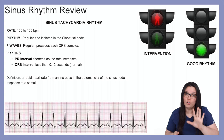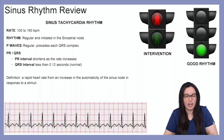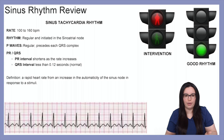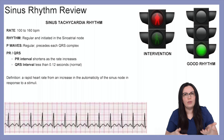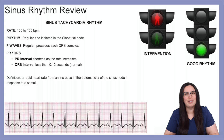To begin we're going to be talking about sinus tachycardia. The rate of sinus tachycardia is between 100 to 160 beats per minute. The rhythm is regular and is initiated in the sinoatrial node. You're going to see regular P waves preceding QRS complexes. PR intervals are shortened as the rate increases but the QRS interval is still normal — less than 0.12 seconds. The definition of this rhythm is a rapid heart rate with an increase in the automaticity of the sinus node in response to a stimulus.